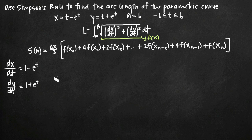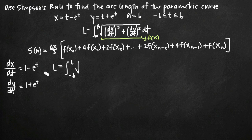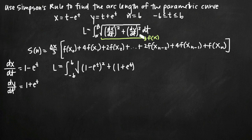Now we plug both of those into our arc length formula to find f of x. Arc length L equals the integral from negative 6 to positive 6 — defined by the interval we've been given — of the square root of dx over dt, which is 1 minus e to the t, squared, plus the derivative of y with respect to t, which is 1 plus e to the t, squared. We take the square root of that whole thing, then multiply by dt.